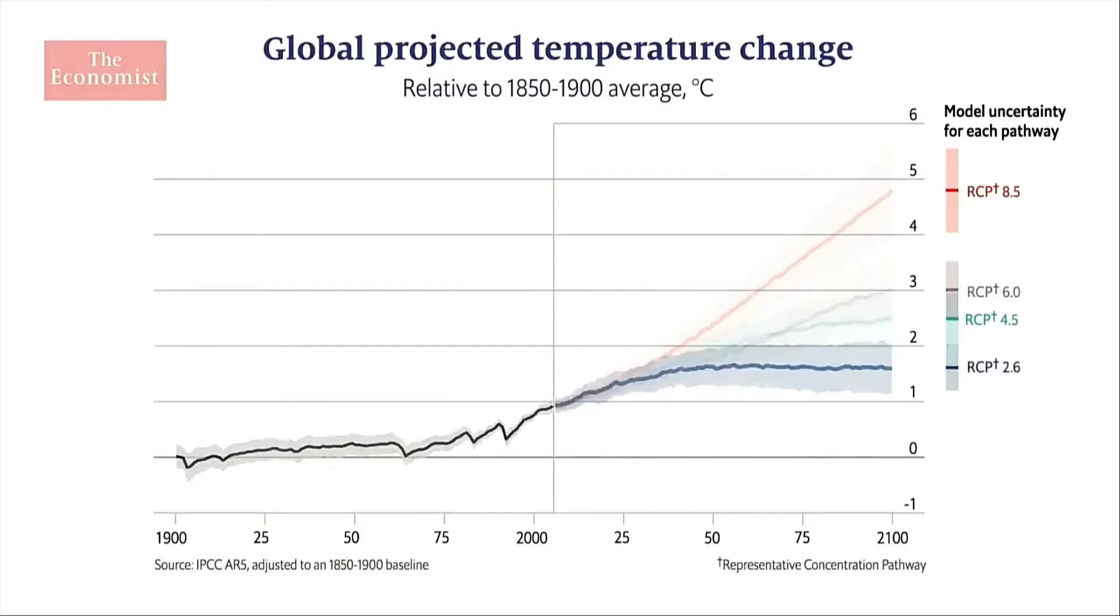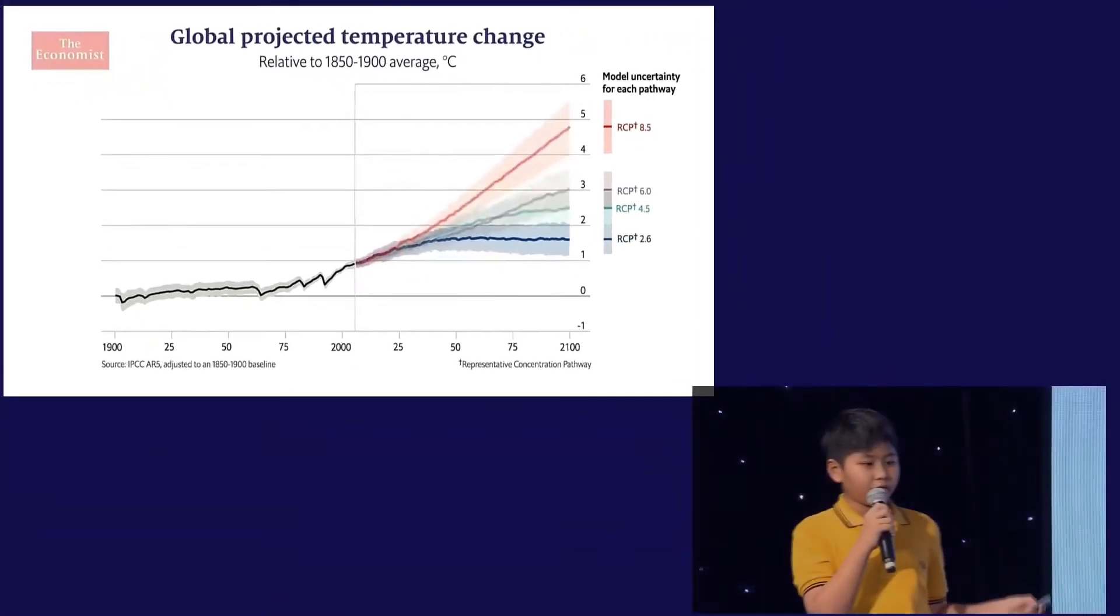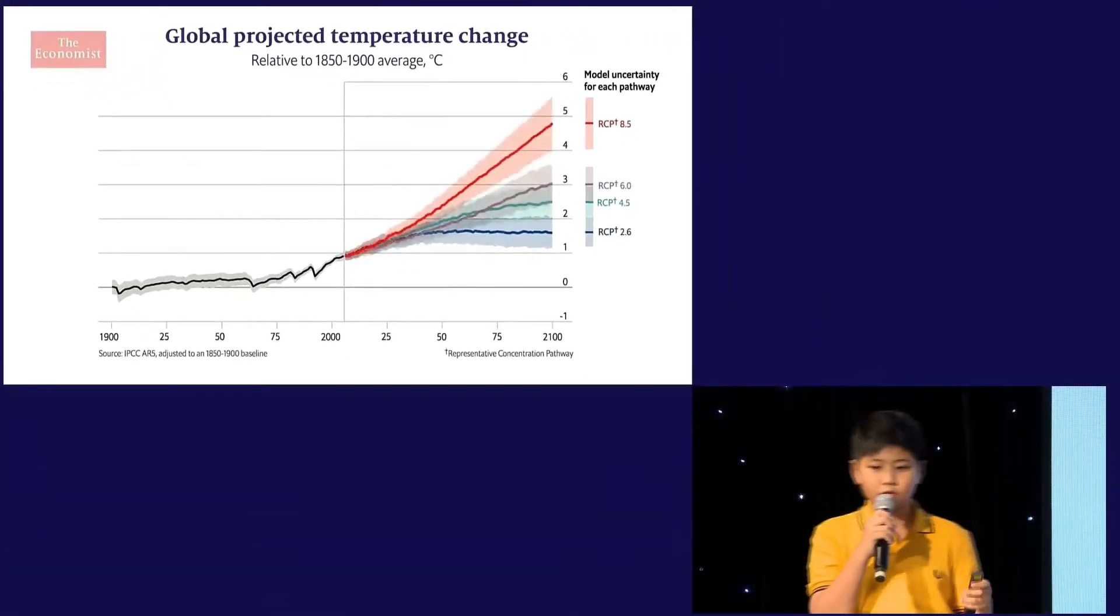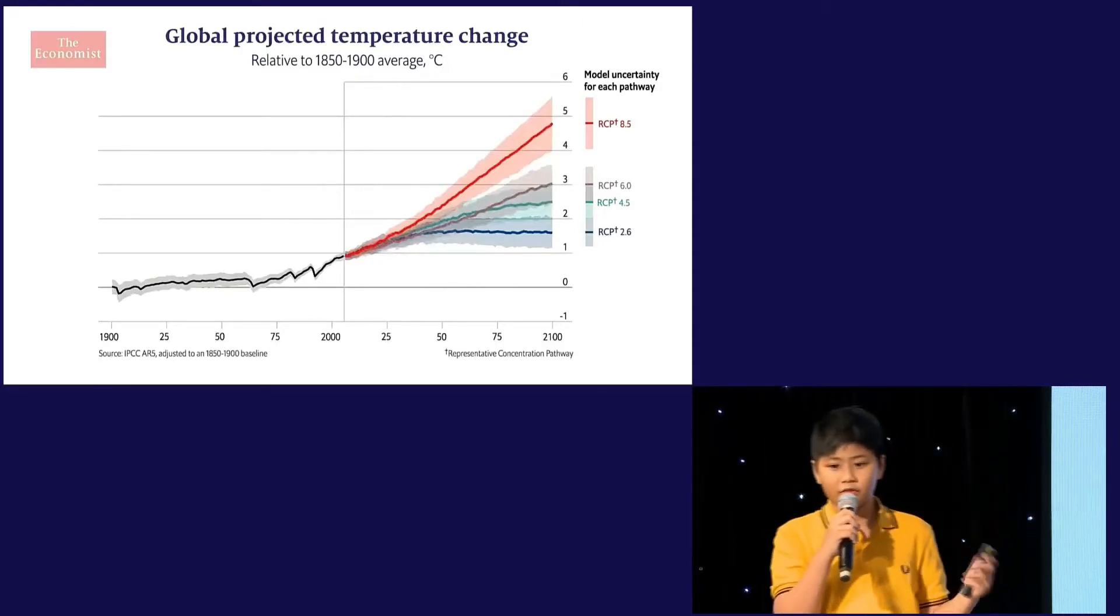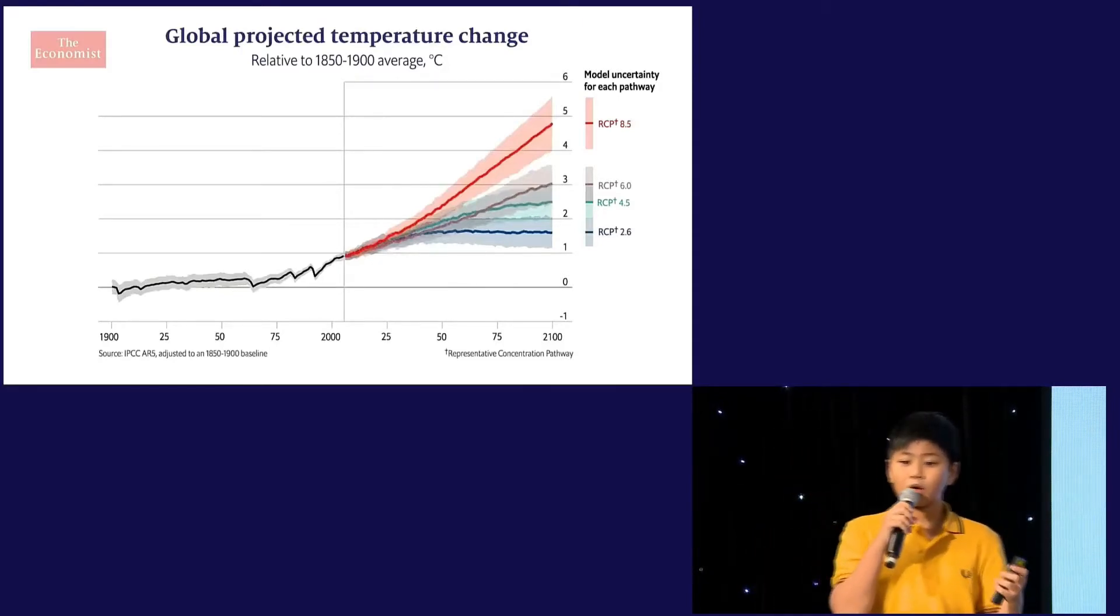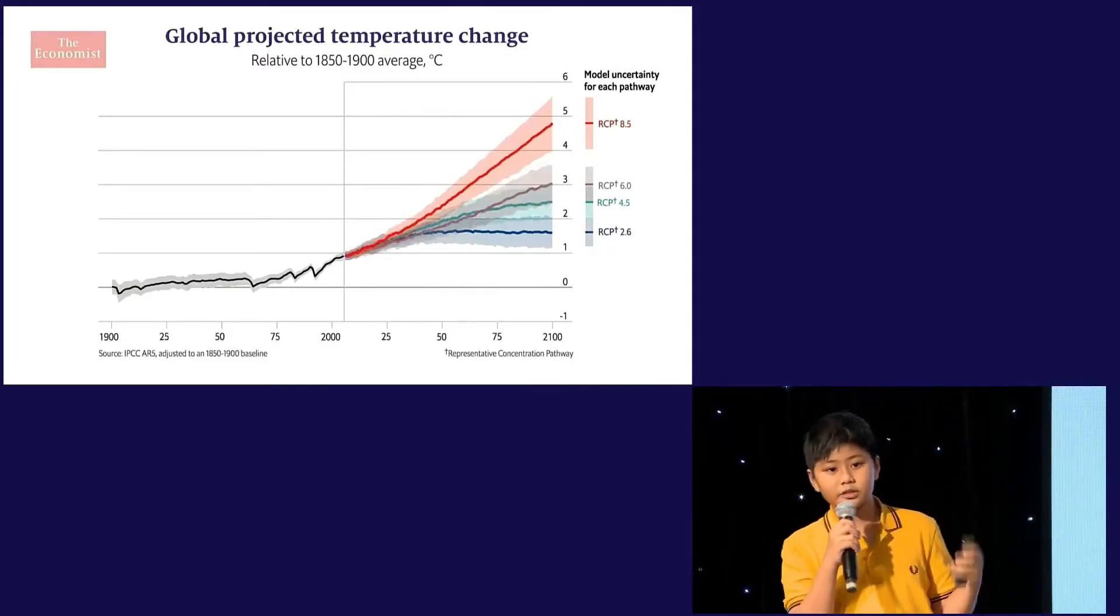And finally, we can hit RCP 2.6 when there's a lot of carbon capture technology. The RCP 8.5 pathway provides a temperature increase of about 2.5 degrees Celsius by 2050. But why 2.5 degrees Celsius is such a big deal? Because warming up our planet by 2.5 degrees Celsius takes a lot of heat.